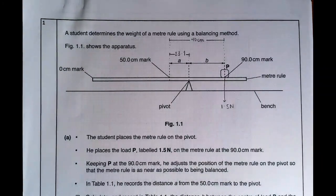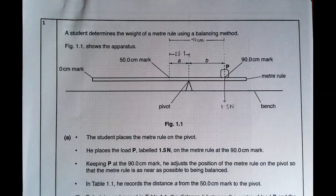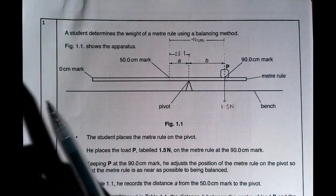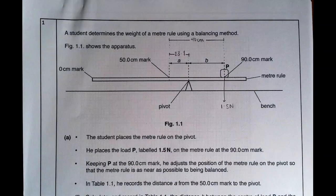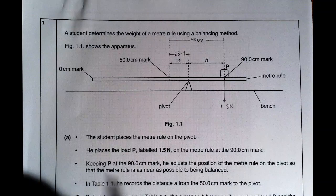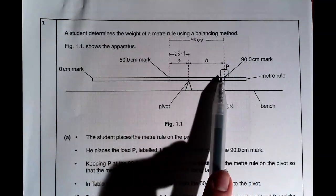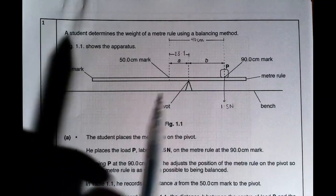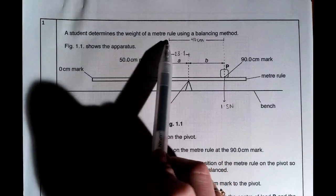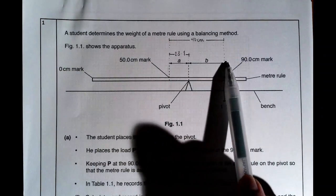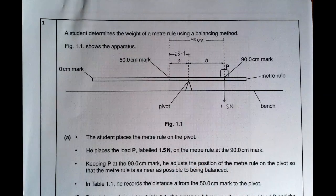Hello, so this is your Alternative to Practical paper. We're going to have a look at question 1 first. You can see it's a moments question. A student determines the weight of a metre rule using a balancing method. Before I even start to read the questions, I add on as much information to the diagram as I can because it will help me understand what's going on. I know this is the 0 centimetre mark of my metre ruler, so this is obviously going to be 100 centimetres. It tells me this is 90, and this is the 50 centimetre mark. So I know that the distance from the edge of a to the far end of b, 50 to 90, must be 40 centimetres.